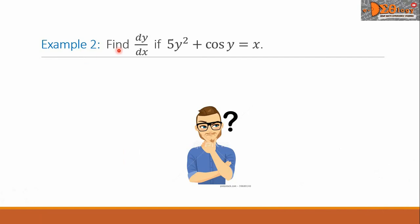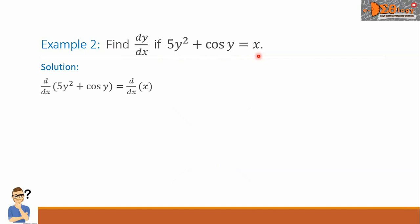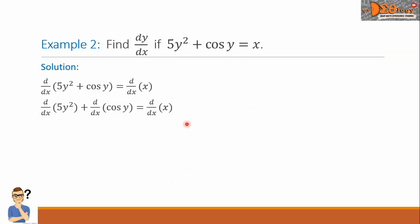Example 2. Find dy over dx if 5y squared plus cosine y equals x. Let us take the derivative of both sides. The left side becomes d over dx of 5y squared plus d over dx of cosine y equals d over dx of x. Taking each derivative: we get 10y times dy over dx, plus the derivative of cosine y which is negative sine y times dy over dx, equals the derivative of x which is 1.